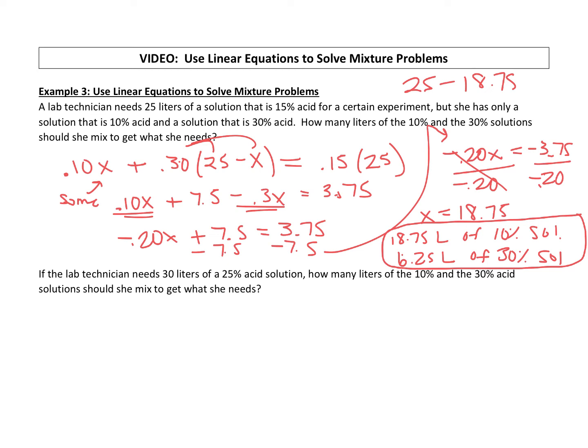Okay, now that we've talked through it, we can go a little faster. If the lab technician needs 30 liters of a 25% acid solution, how many liters of the 10% and the 30% acid solution should she mix to get what she needs? Okay, so very similar idea, we just have a little bit different numbers.